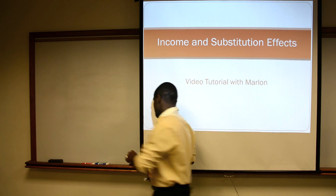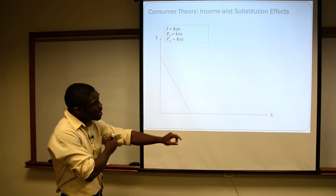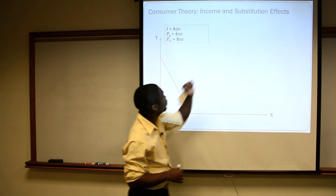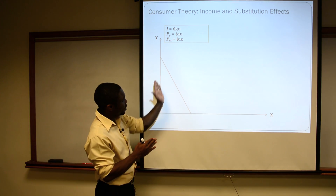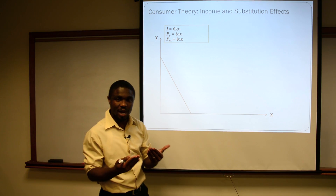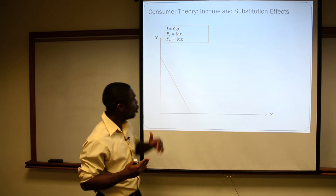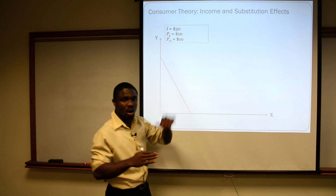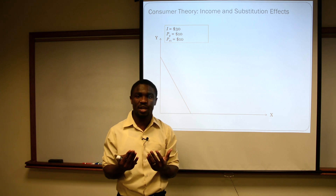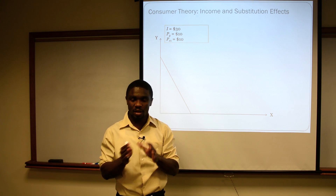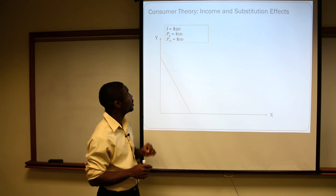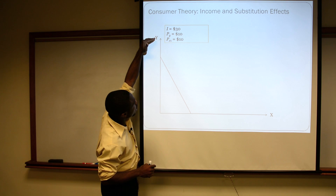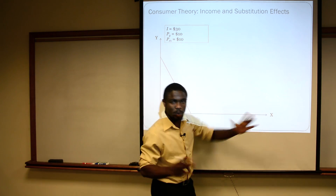Let's go ahead and talk about it a little bit more. In order for us to understand the difference between income and substitution effects, we have to understand what happens to our budget line when prices change. Our budget line gives us an outer bound on the combination of goods that we can buy, given the prices and the income. Let's take generally good Y and good X, just representative goods.